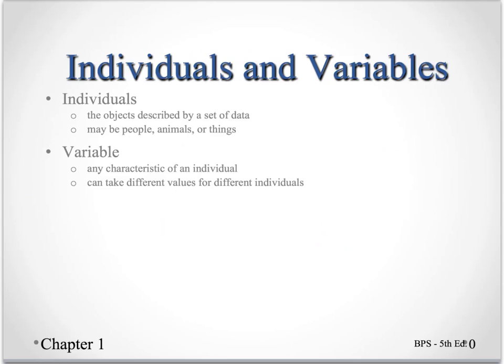So first of all, let's talk about what individuals and variables are. When you're gathering data, the individuals are the objects described by the set of data. Now those might be people, but they could also be animals or things. When you're collecting data about house sales, the individuals would be houses. A variable is a characteristic of the individual, and it can take on different values for different individuals.